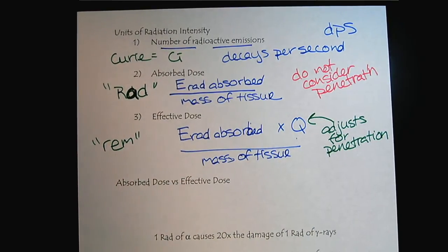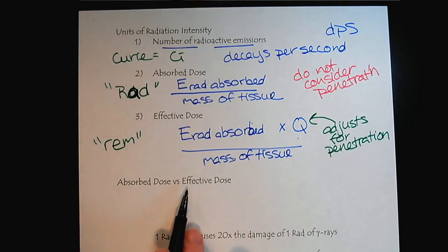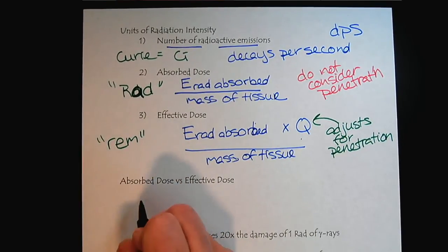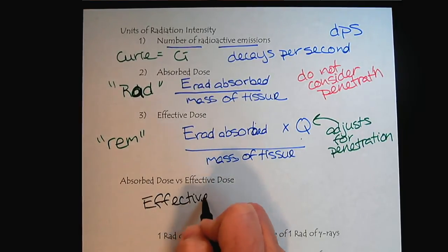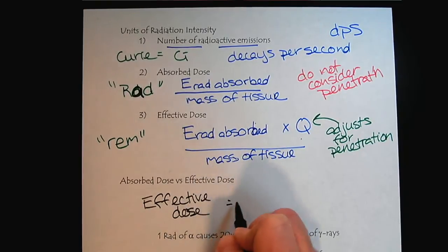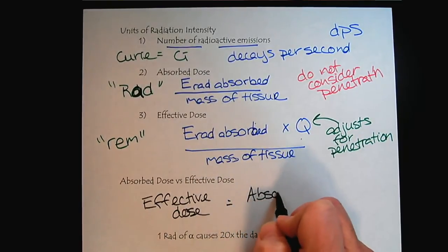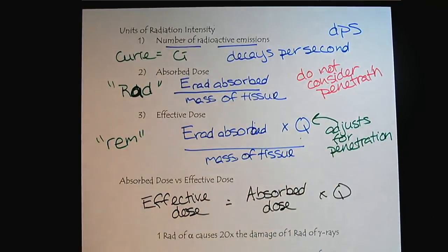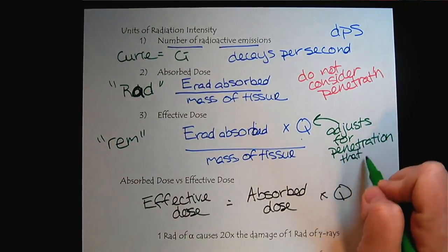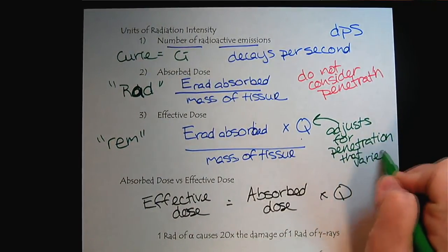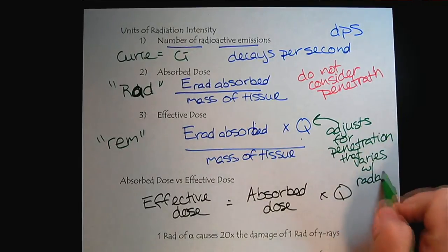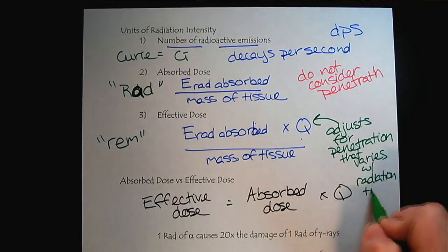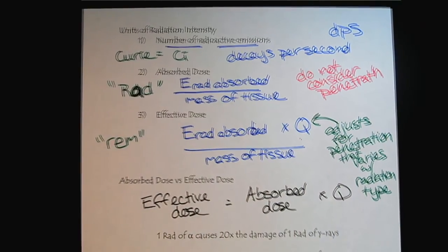So the absorbed dose versus the effective dose. Really, if you want to, you could think of it as the effective dose is simply the absorbed dose times Q. And this adjusts for penetration that varies with radiation source or radiation type.